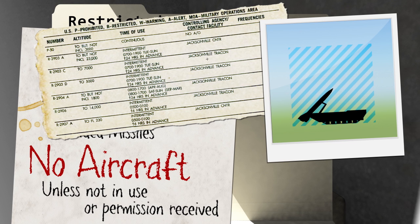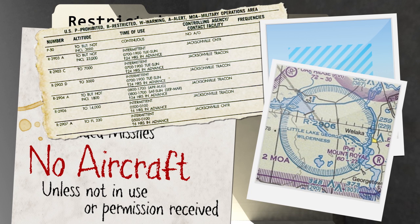Sectional charts depict this airspace in the same manner as prohibited areas using a blue hashed shape. However, the identifier now starts with the letter R instead of P.